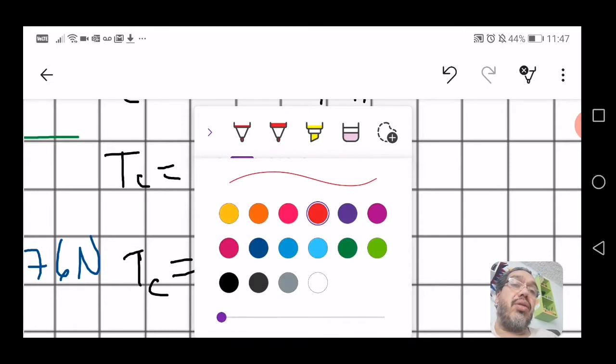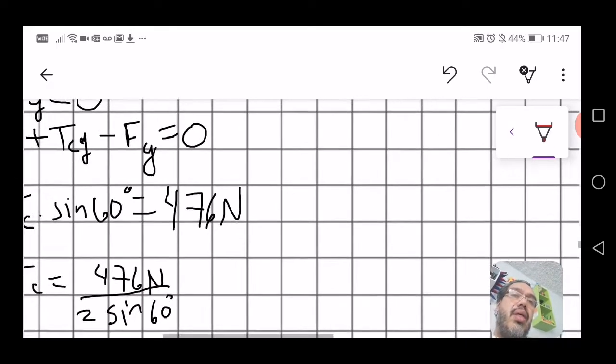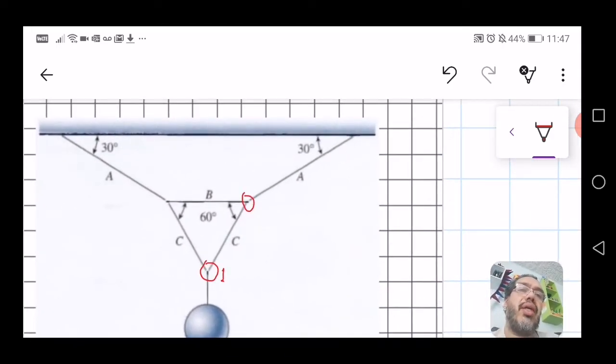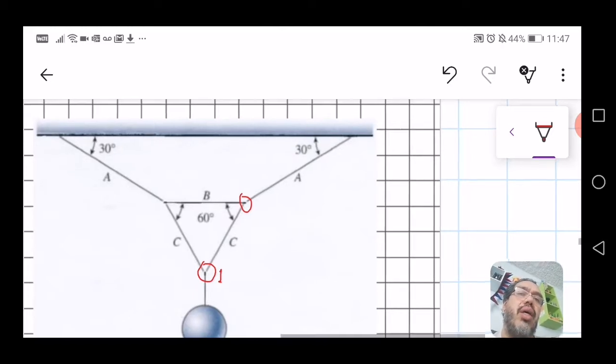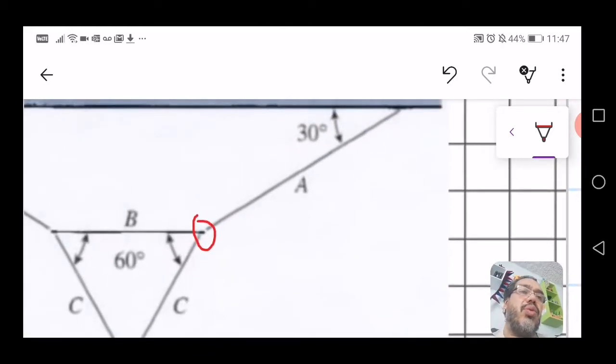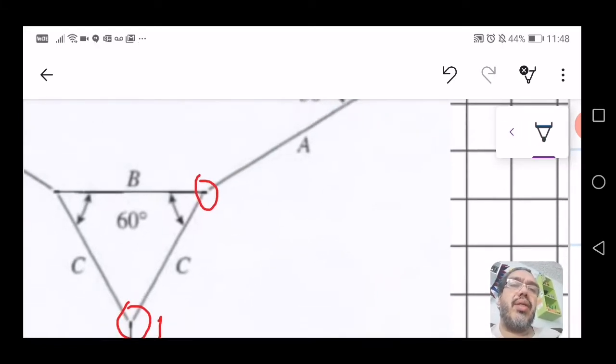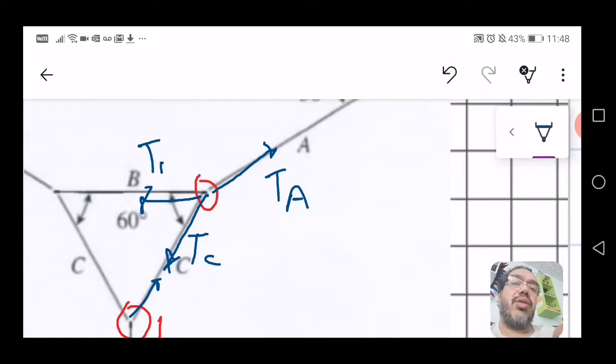For your second answer, you need to find the tensions in the A direction and the B direction. But the situation here is as follows. Over on this point, you have a tension like that, which is the same as a tension like this because of the third law, that's TC. Then you also have a tension in the A direction and you also have a tension in the B direction.